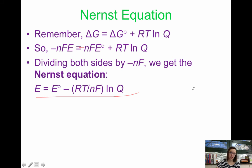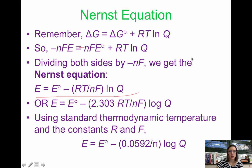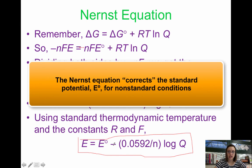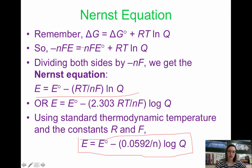This is the Nernst equation. This allows us to calculate cell potential at any condition because if we have Q at any condition, we can find cell potential. When we plug everything in for RT and F, we can reduce that number to 0.0592. So when we want the actual Nernst equation, we're going to use this one down here.